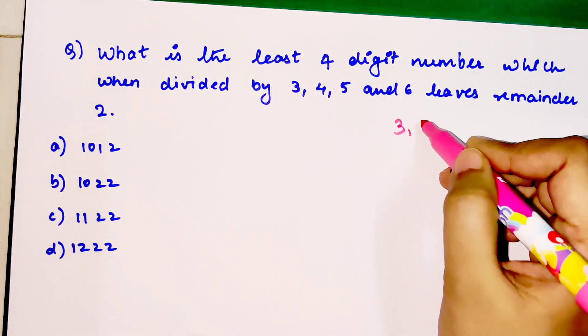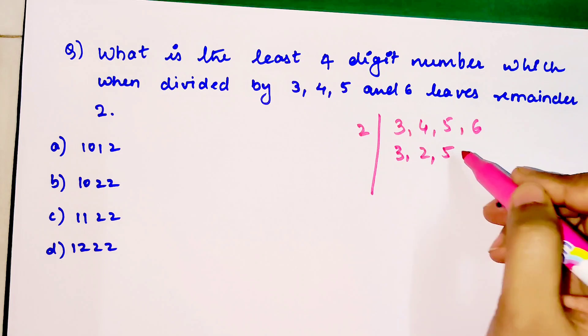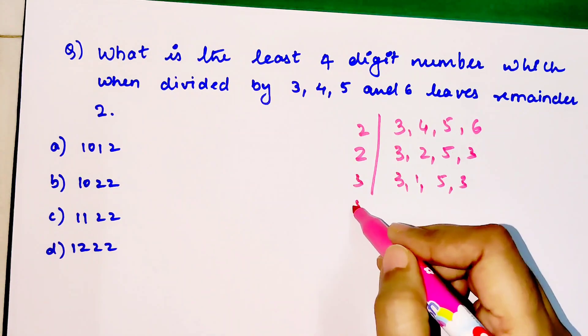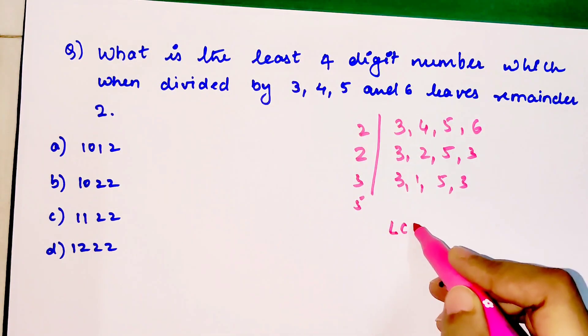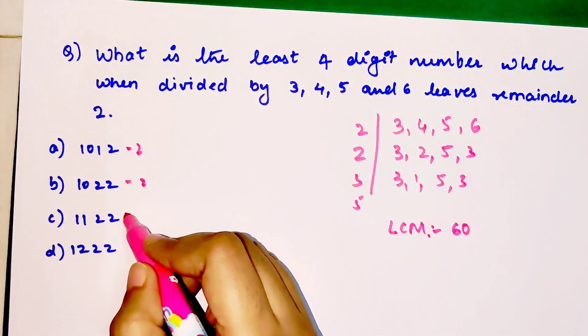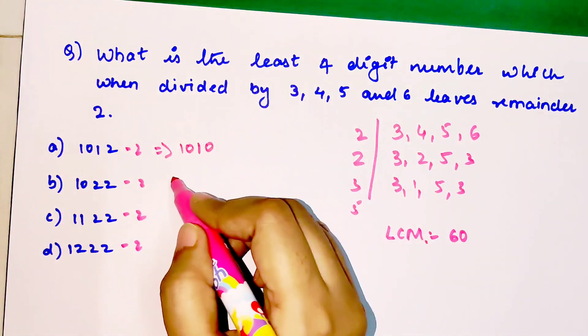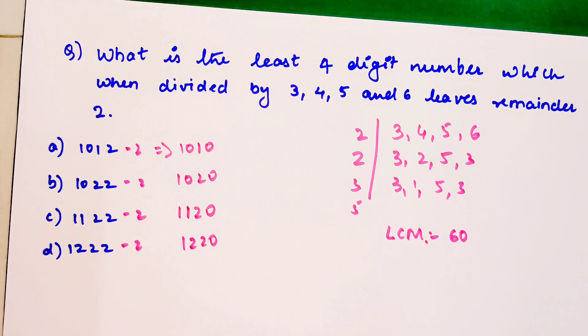Let's find the LCM of 3, 4, 5 and 6. First divide by 2, then by 2 again, then by 3, then by 5. So 3 × 5 = 15, 15 × 2 = 30, 30 × 2 = 60, so the LCM is 60. We need a number which when divided by 60 gives remainder 2. Instead of getting complicated, subtract 2 from all options. So we get 1010, 1020, 1120, 1220. Now divide each by 60.